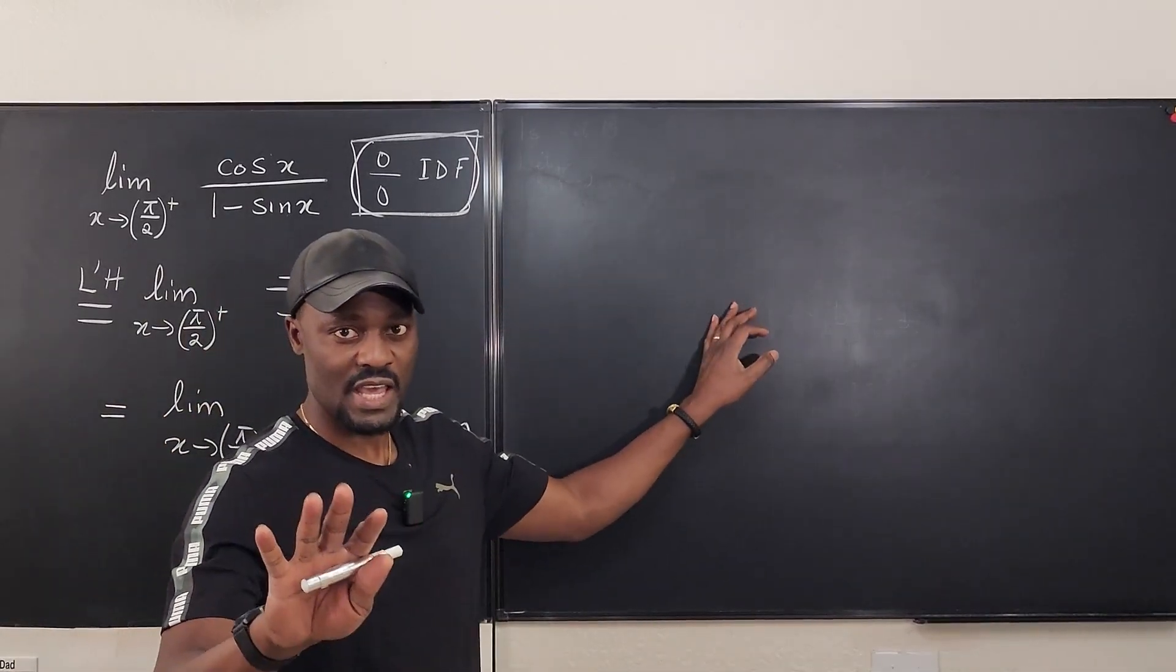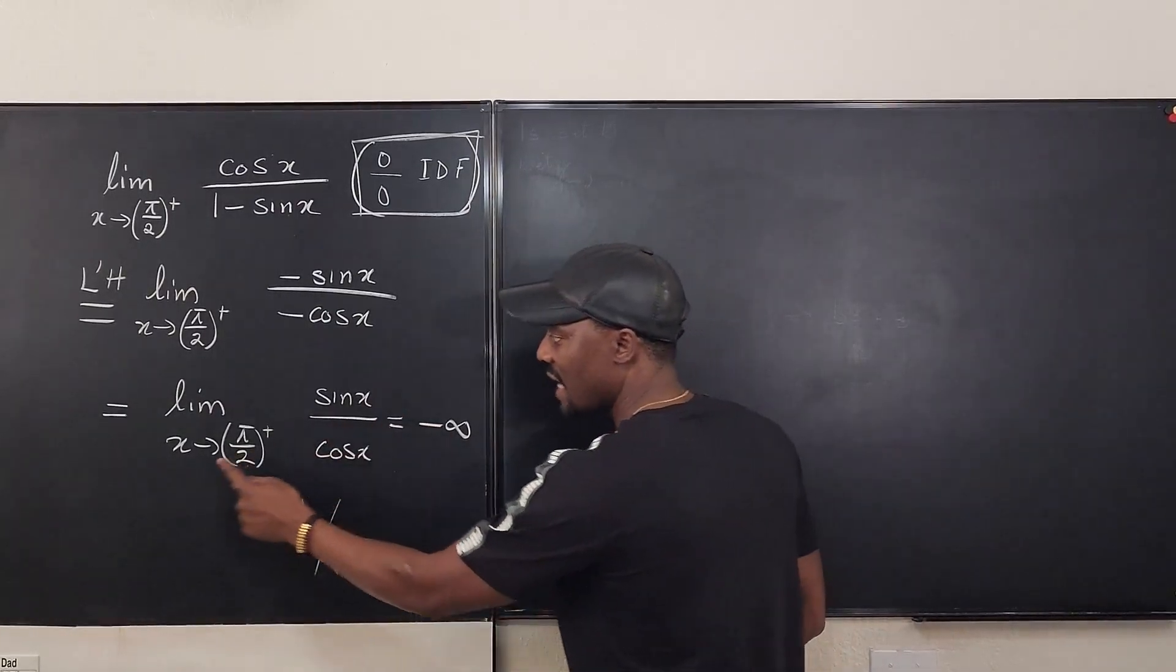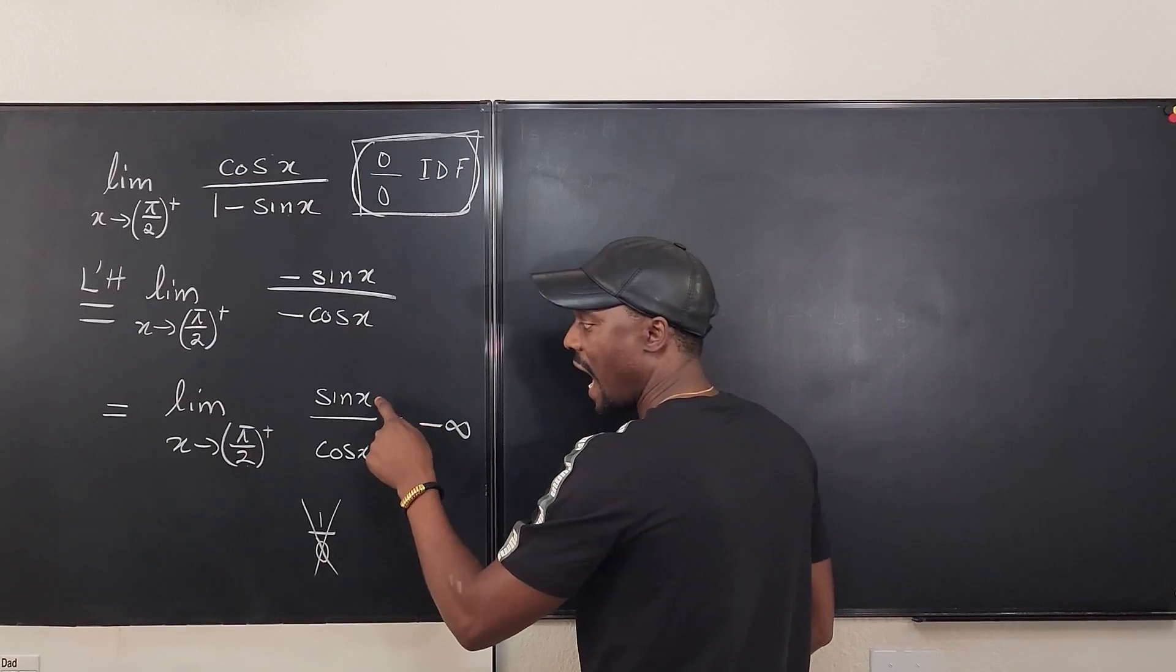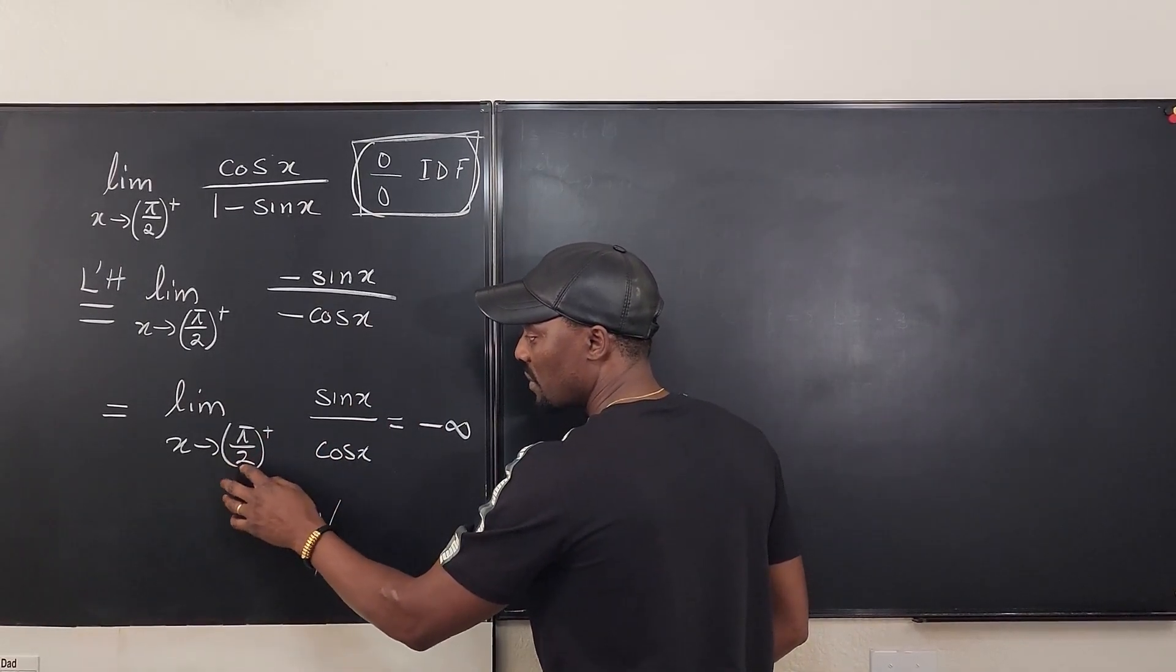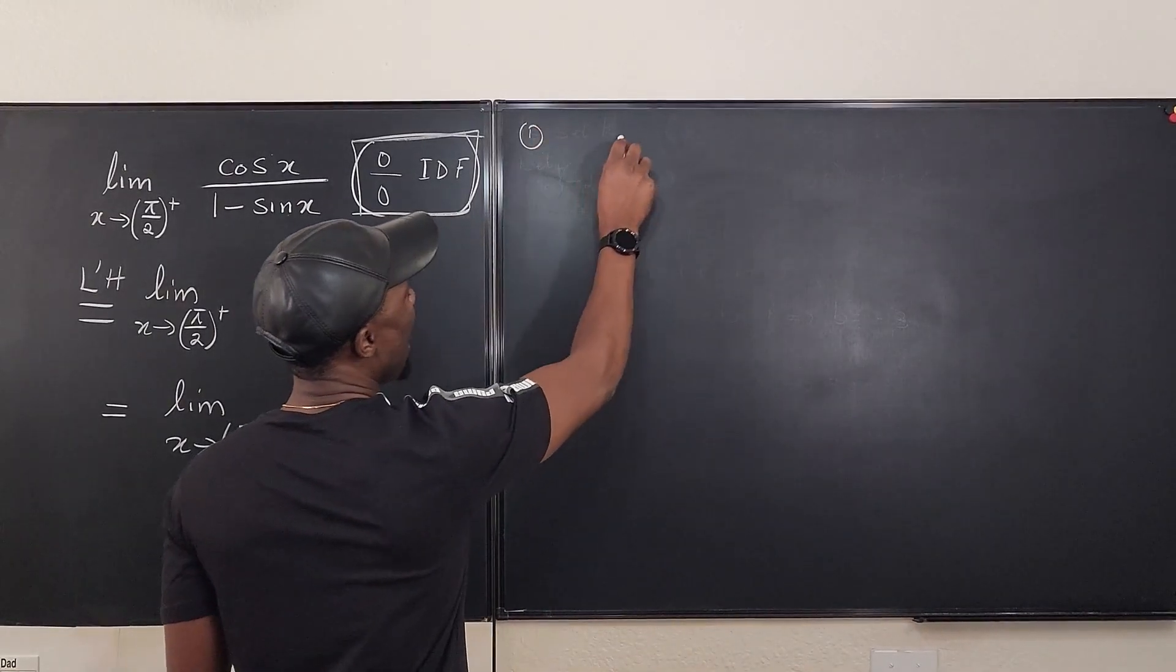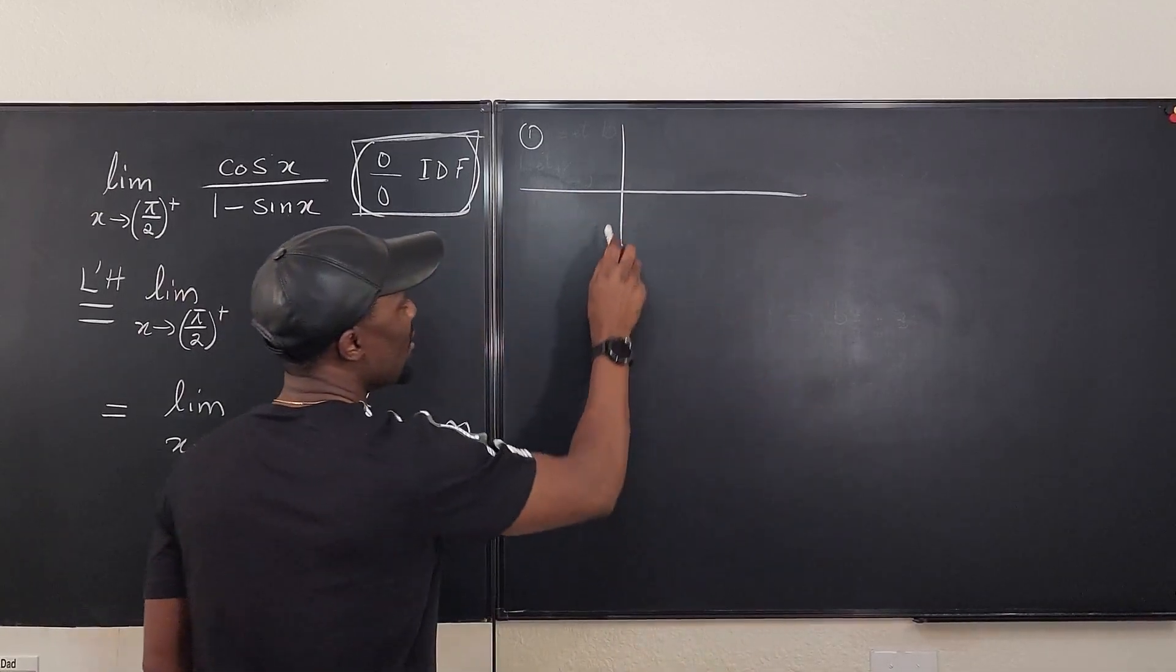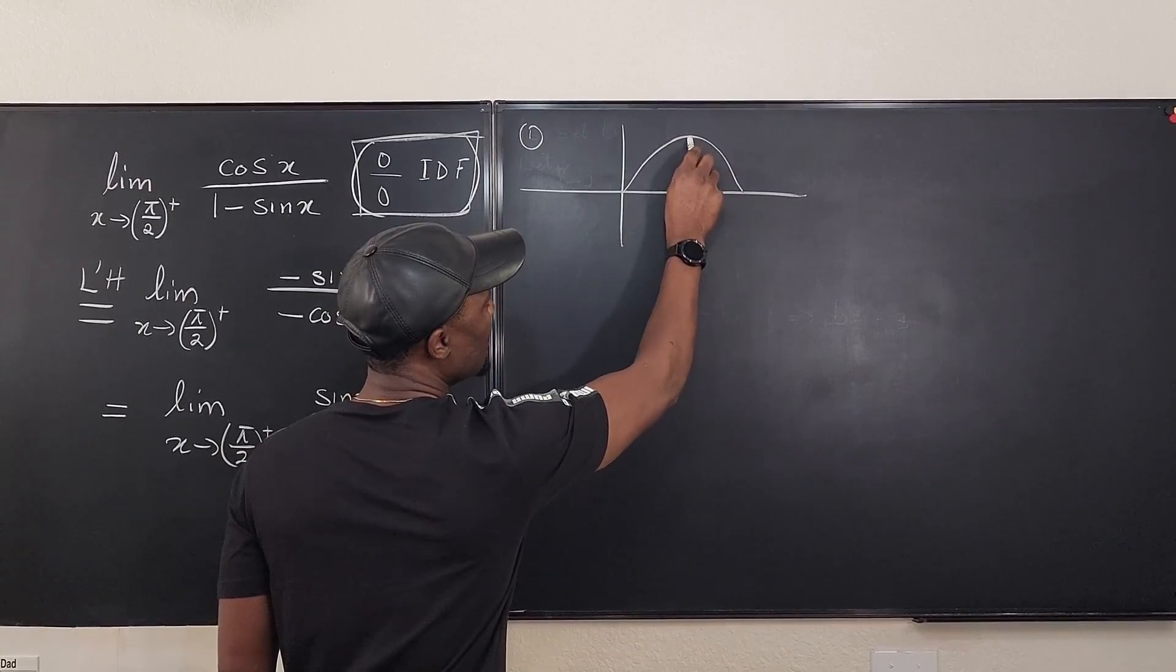So, first case, I'm going to show you what happens as x approaches pi over 2 from the right for sine x and cosine x. Let's do the first one. I'm just going to sketch the graph of both sine x and cosine x. The graph of sine x goes this way. And this is pi over 2.